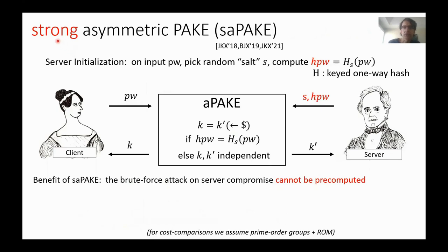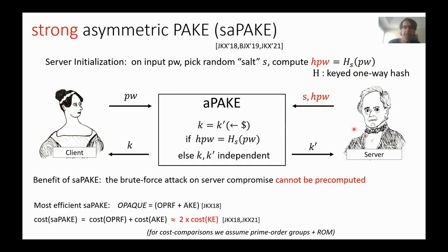It can be strengthened to strong asymmetric PAKE where the hash is randomized. Because it's a randomized hash, it cannot be pre-computed before server compromise, since the adversary doesn't know the randomization. The most efficient strong APAKE is the OPAQUE construction, which is a compiler from an oblivious random function and authenticated key exchange. Both of these can be instantiated at the cost of one key exchange each, giving two key exchange costs for strong asymmetric PAKE.